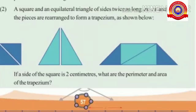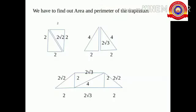Shall we consider question number 2? A square and an equilateral triangle are cut and the pieces are rearranged to form a trapezium. Remember, the sides of the triangle are twice that of the square. We have to find out the area and perimeter of the trapezium so formed. Let's start.